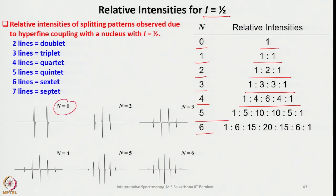For N=1 we see a doublet; N=3 gives a triplet; N=4 gives a quartet; N=5 gives a quintet; N=6 gives a sextet; and N=7 gives a septet. This relative intensity diagram holds for nuclear spin i equals half.